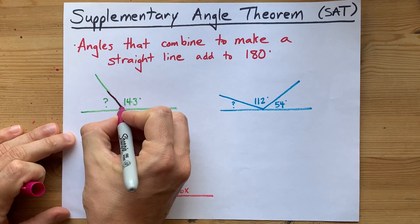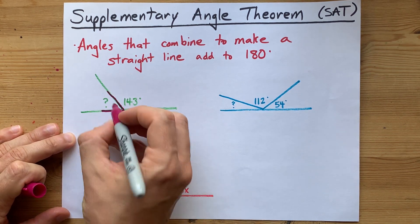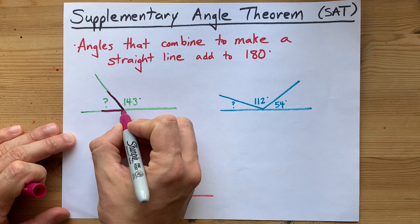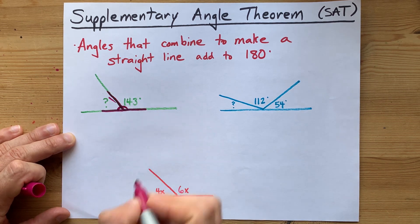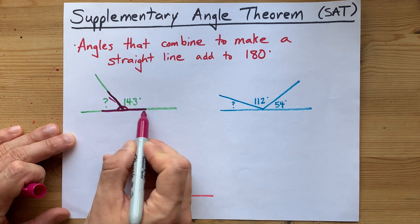So we have one angle here that's labeled with a question mark, and we have an obtuse angle pressed up against it. Putting those two together gives you a straight line. See, it's a straight line.